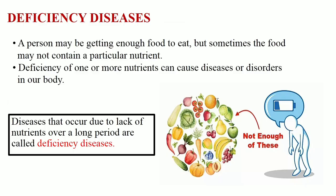Deficiency diseases: A person may be getting enough food to eat, but sometimes a certain nutrient is missing from the diet. If this continues over a long period of time, the person may suffer from its deficiency. Deficiency of one or more nutrients can cause diseases or disorders in our body. Diseases that occur due to lack of nutrients over a long period are called deficiency diseases.